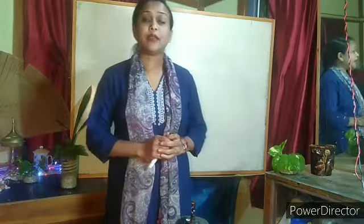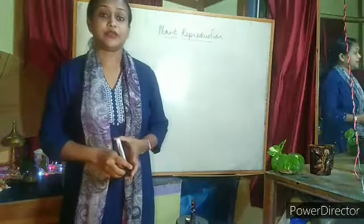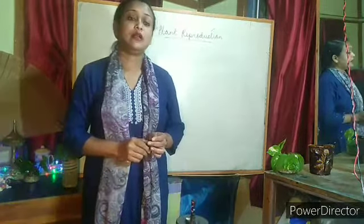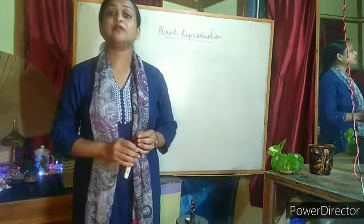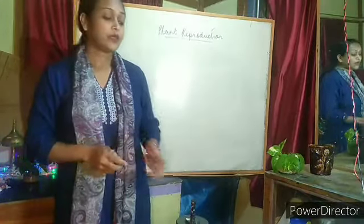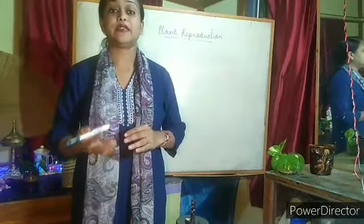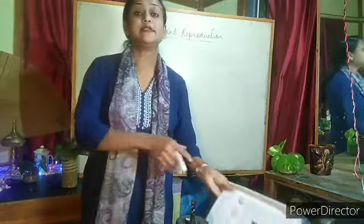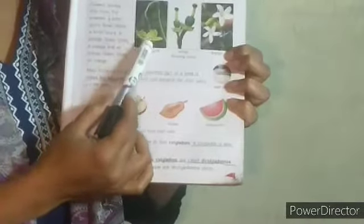Let's start our first chapter in science — plant reproduction. When discussing plant reproduction, let's first talk about plants. We can see plants everywhere, and most plants bear flowers. Those plants which bear flowers are known as flowering plants. The flowers develop into fruits — as you can see in this picture, the bitter gourd flower forms a bitter gourd, an orange develops from an orange flower, and papaya develops from a papaya flower.